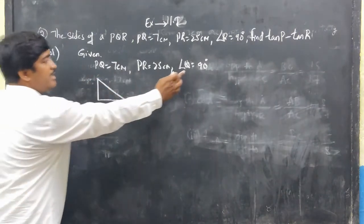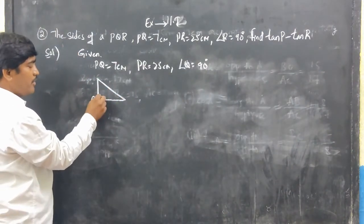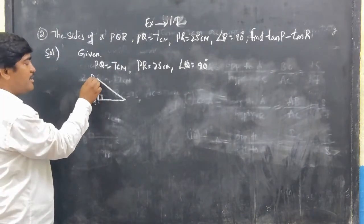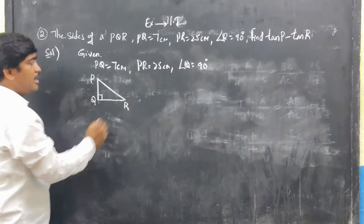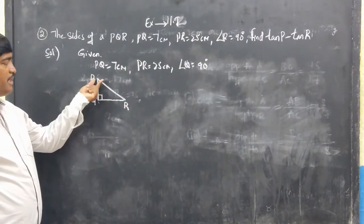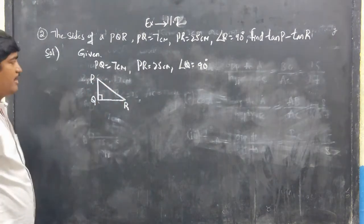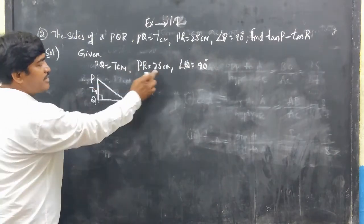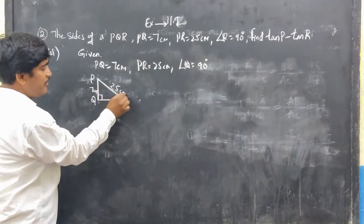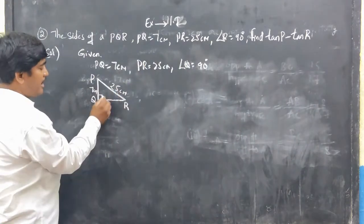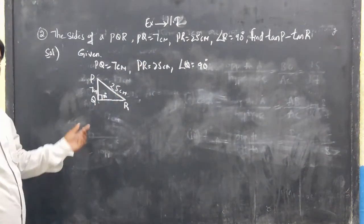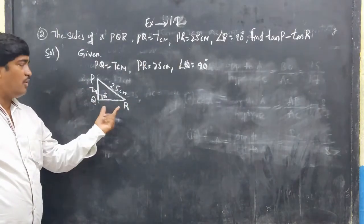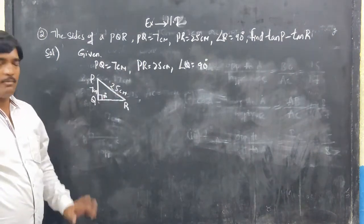I draw the figure with Q at right angle, P and R at the other vertices. PQ = 7 cm and PR = 25 cm are given, but QR is not given. So first I will find QR using the Pythagoras theorem. Since PR is the hypotenuse (longest side = 25 cm).